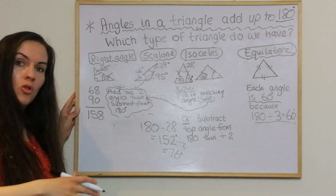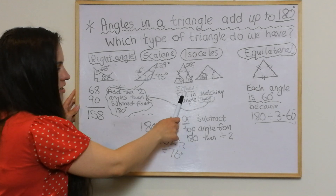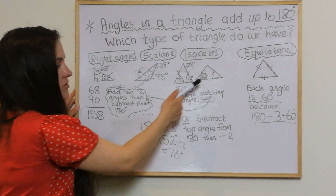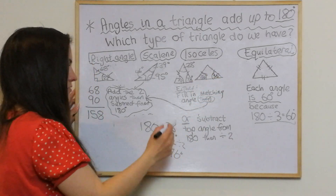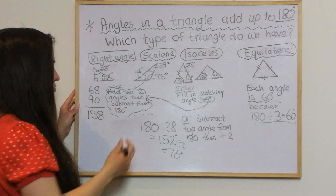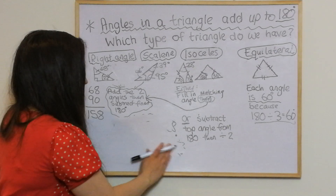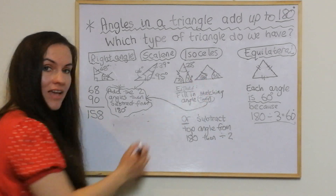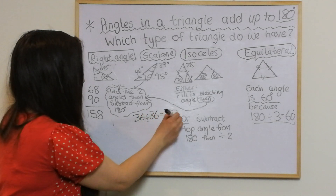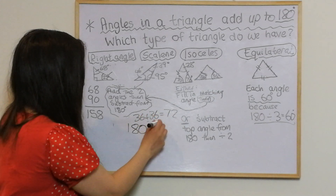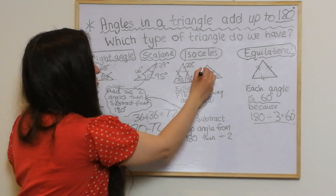In this isosceles example we can fill in the missing matching angle — it's 36, so the other one will also be 36. Then we add the two angles and subtract from 180: 36 add 36 gives me 72, and then 180 take away 72 is 108 degrees. So the top angle is 108 degrees.